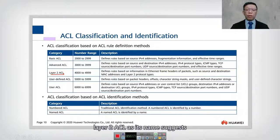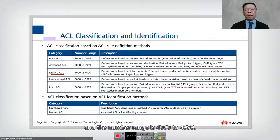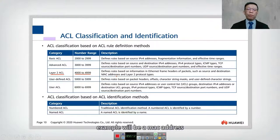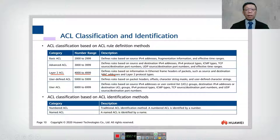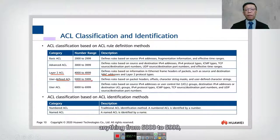We also have Layer 2 ACL. As the name suggests, it matches based on Layer 2 information, with a number range of 4000 to 4999. An example would be a MAC address — if you want to match on MAC addresses, you use the 4000 to 4999 range.